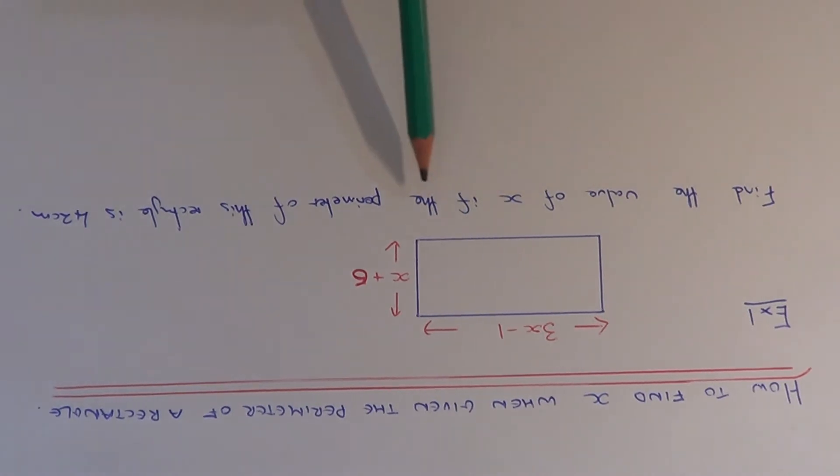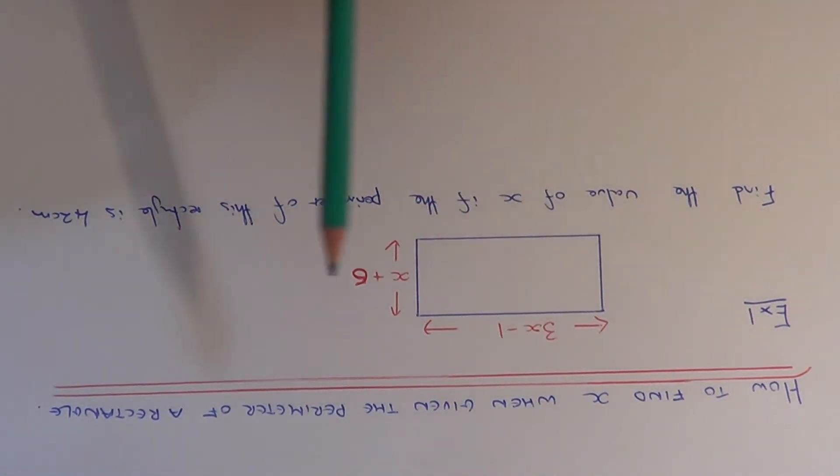We're going to find the value of x if the perimeter of the rectangle is 42cm and we're given the length as 3x minus 1 and the width is x plus 6.